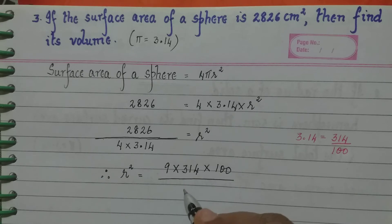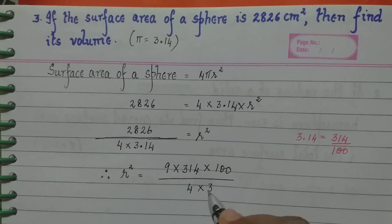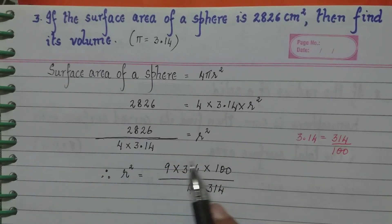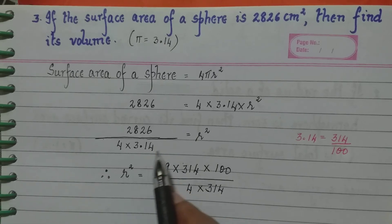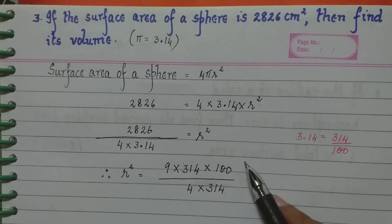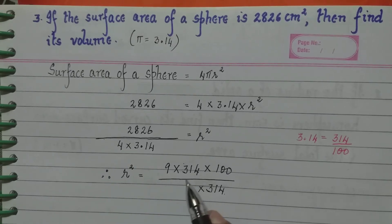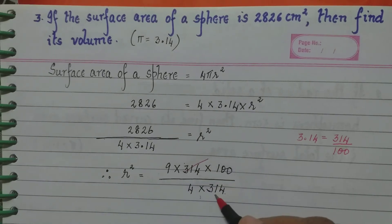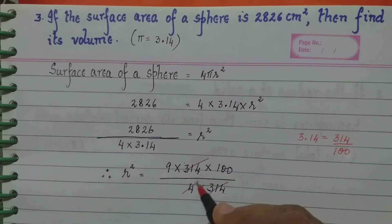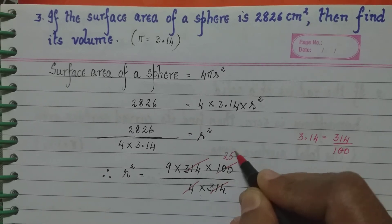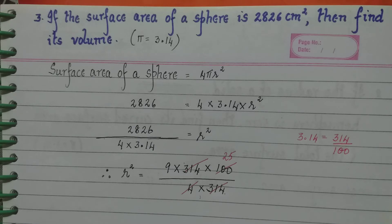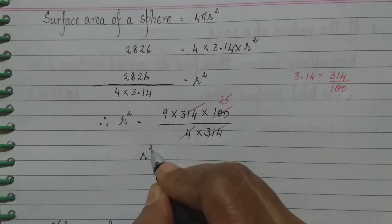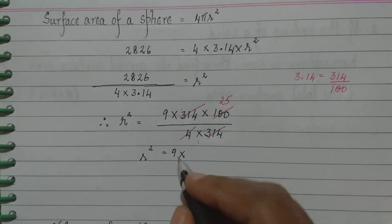In the denominator we have 4 into 314. Why? Because 2826 is 9 into 314. We have written 3.14 as 314 upon 100, and the 4 remains as it is. Now we can cancel 314 and 314. Then 100 divided by 4 goes 25 times. Therefore r² equals 9 into 25.